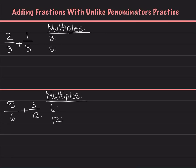Hi, in this video I'll go over how to add fractions with unlike denominators. Looking at the first problem, it says 2 thirds plus 1 fifth. The denominators are different, which means in order to get the same denominators, we need to find the least common multiple.